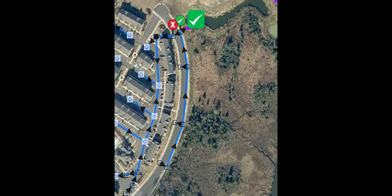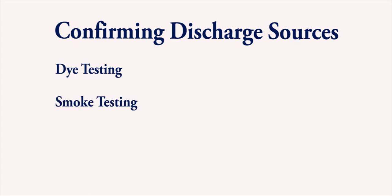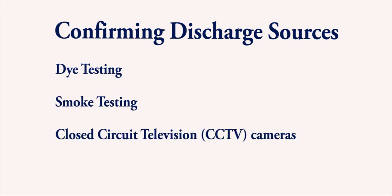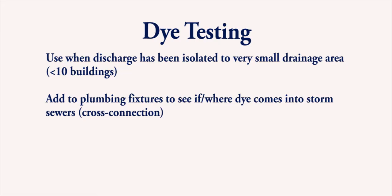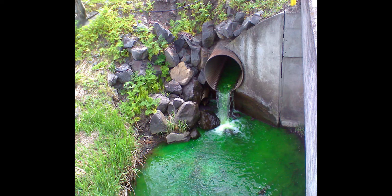Once you have narrowed down the discharge to a specific point in the pipe system, you can use a number of techniques to confirm the actual source. These include dye testing, smoke testing, and closed circuit TV or CCTV cameras. Dye testing is useful when the discharge has been isolated to a very small drainage area with fewer than 10 buildings and the suspected discharge is a sewage connection to the stormwater system. Dye is added to plumbing fixtures to see if and where the dye comes into storm sewers, confirming a cross connection.